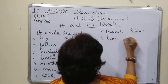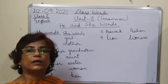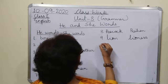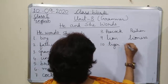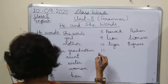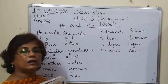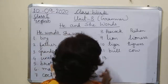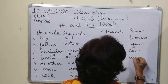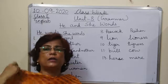Lion — babbar sher — jiske mane hote hain. Lion is babbar sher, lioness is sherni. Tiger — jo sher hota hai jo stripe wala hota hai — Tiger and tigress. Bull is bail. Cow is gaay. Horse is ghoda. Mare is ghodi. These are some of the very common he and she words.